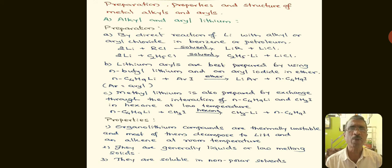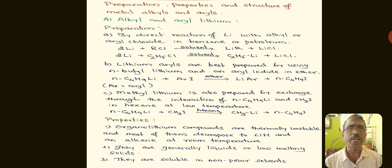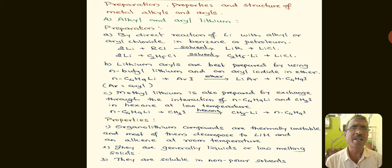This compound can be prepared by the direct reaction of lithium with alkyl or aryl chloride in benzene or petroleum ether. When lithium is treated with alkyl chloride in the presence of a solvent like benzene, we get the alkyl lithium and lithium chloride. For example, if we take ethyl chloride, we get ethyl lithium.